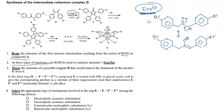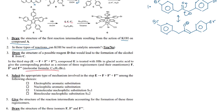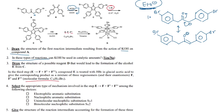Draw a structure of a possible reagent D that would lead to the formation of the alcohol E from C. We have to draw what reagent we might use here, and we have to figure out what F, F dash, and F double dash are. It's given that these are a mixture of three regioisomers with the molecular formula C36H23Br5. And then we have to figure out what the mechanism is. Let's first write a mechanism for this reaction.